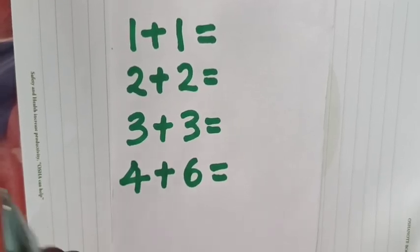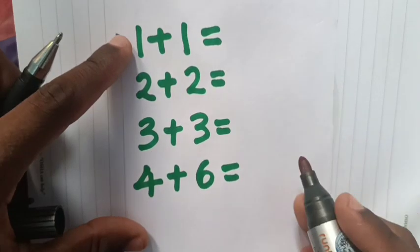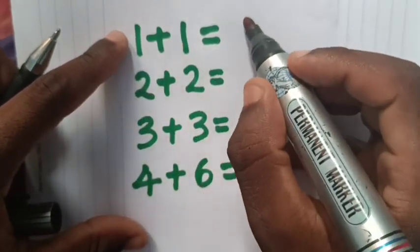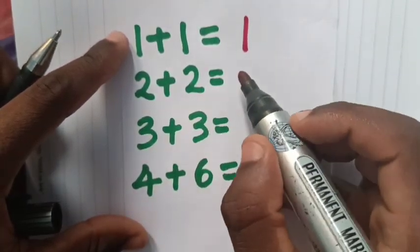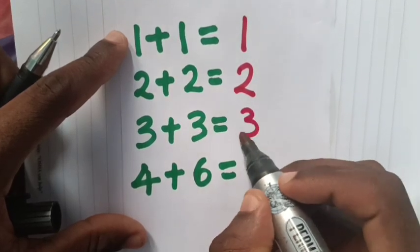Hello, welcome! Let's solve this viral math puzzle. 99% of people get this wrong. The puzzle: 1 plus 1 equals 1, 2 plus 2 equals 2, and 3 plus 3 equals 3.